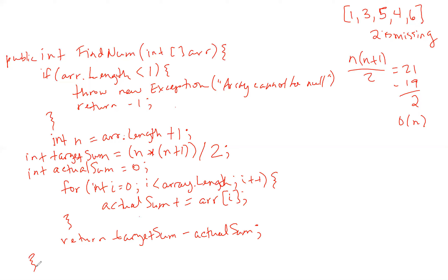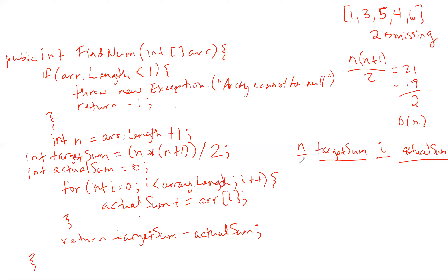Let's run through this. First we calculate n equals array.length plus one. Our array is one, two, three, four, five — so five plus one, n is six. Our target sum: six plus one is seven, times six is 42, divided by two. So our target sum is 21.